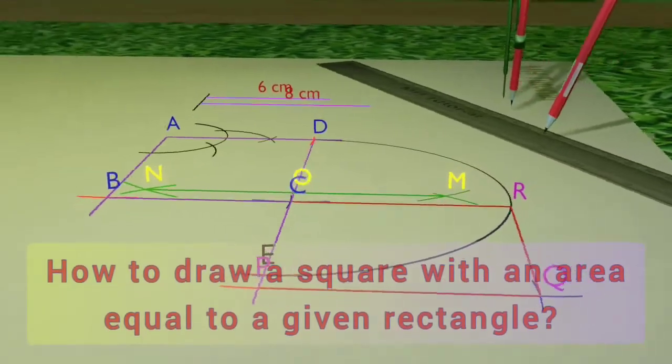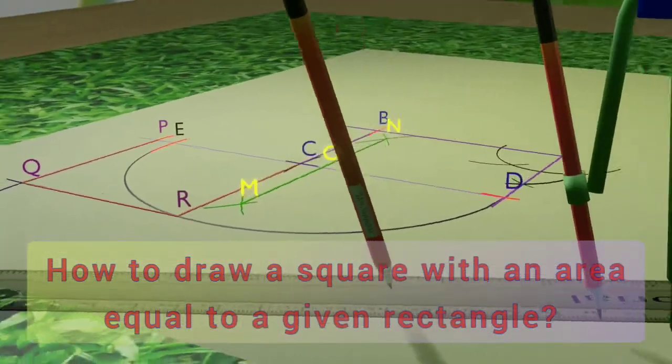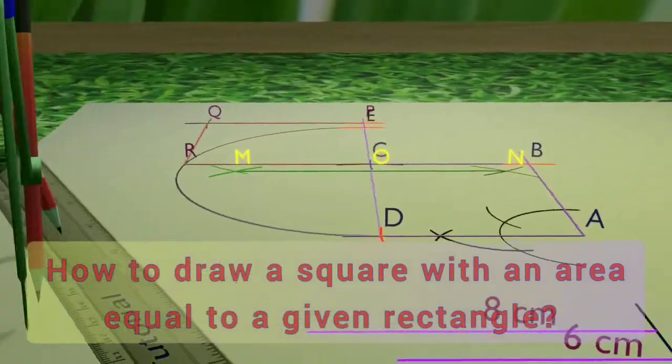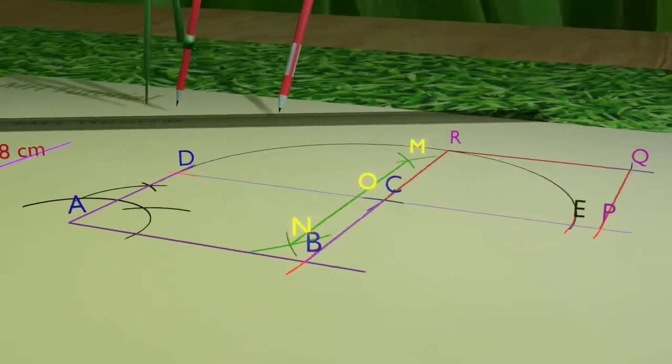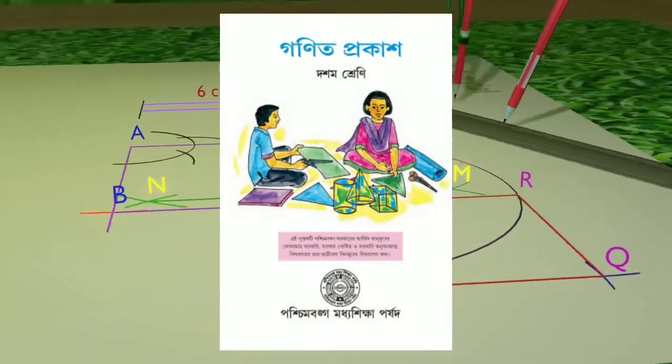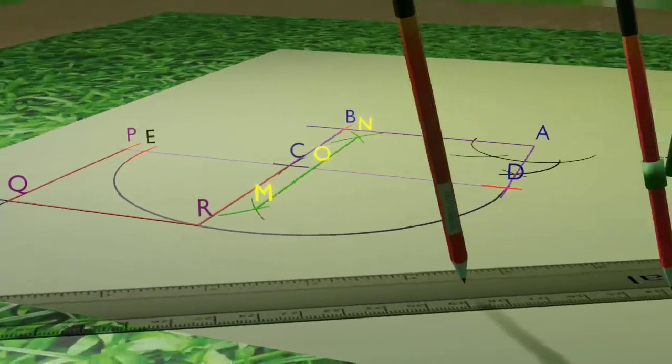How to draw a square with an area equal to a given rectangle - this is what we are going to learn now. In this 3D animation video, we will learn the whole process by solving a typical question from the WBBSE textbook of mathematics. The statement of the question is like this.